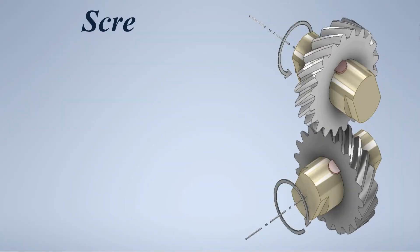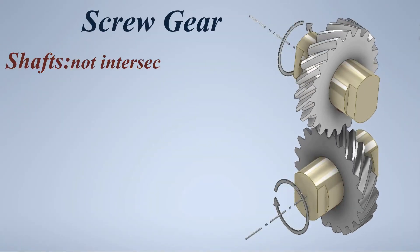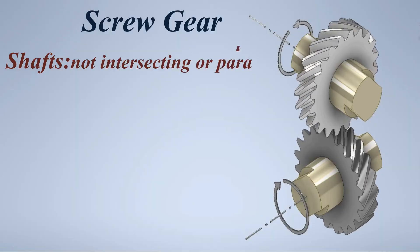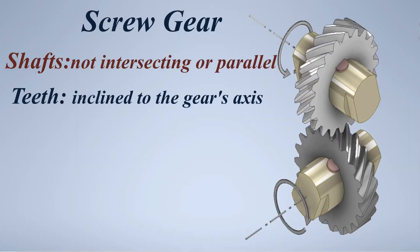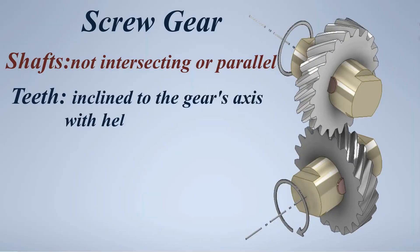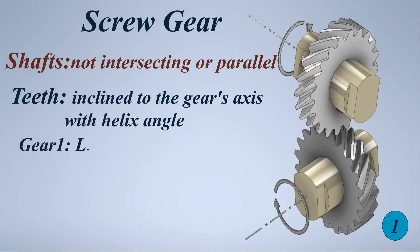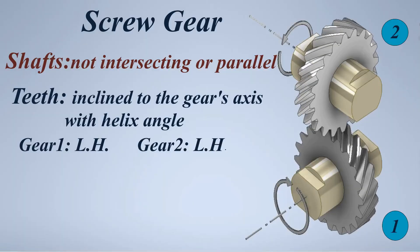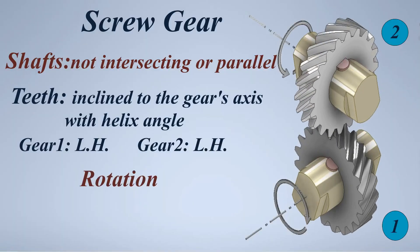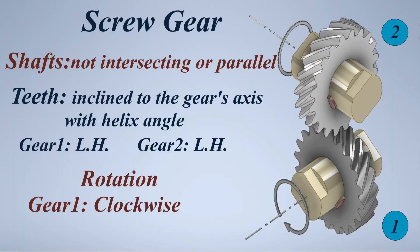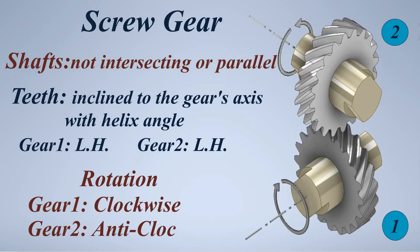Screw gear. Shafts: not intersecting or parallel. Teeth: inclined to the gear's axis with helix angle. Gear 1: left hand. Gear 2: left hand. Rotation — Gear 1: clockwise, Gear 2: anticlockwise.